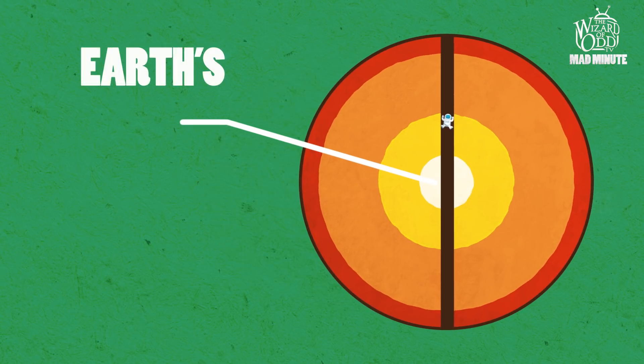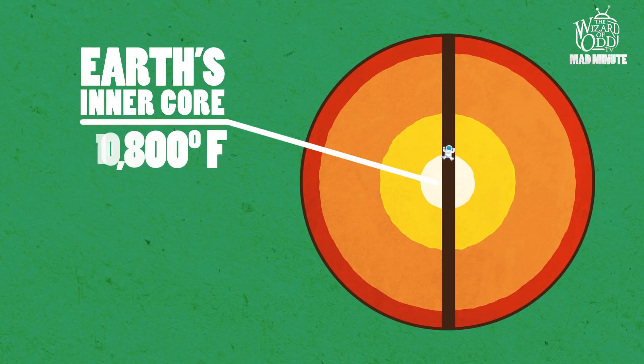Once you reach the Earth's inner core, the temperature there is about 10,800 degrees Fahrenheit, the same as the surface of the Sun.